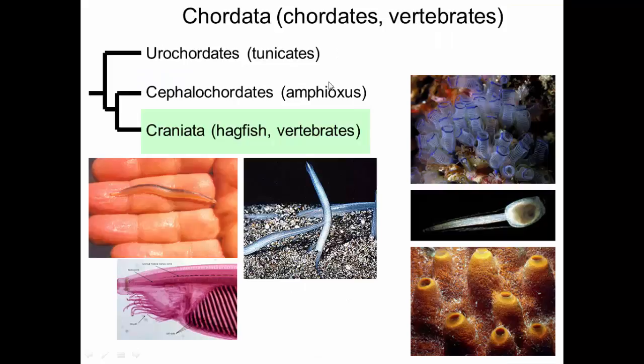Moving on to chordates, the sister group of echinoderms — this includes chordates and vertebrates. Basal within Chordata we have tunicates, which are these guys here. They start off life living like we'd expect a chordate should, but then they actually implant in the substrate and turn themselves into what looks like a little sponge. They don't really live the lifestyle we would expect of a member of Chordata.